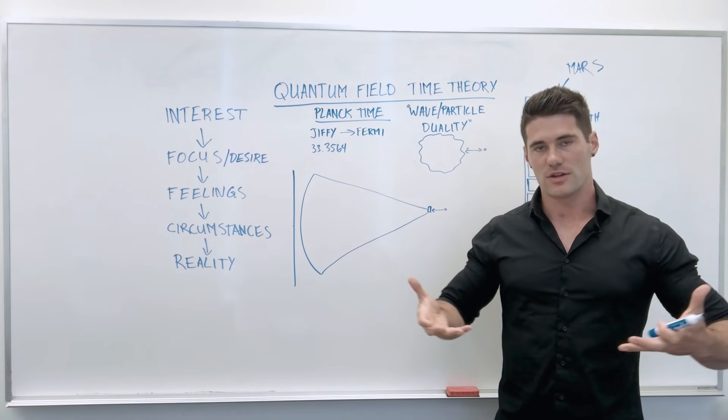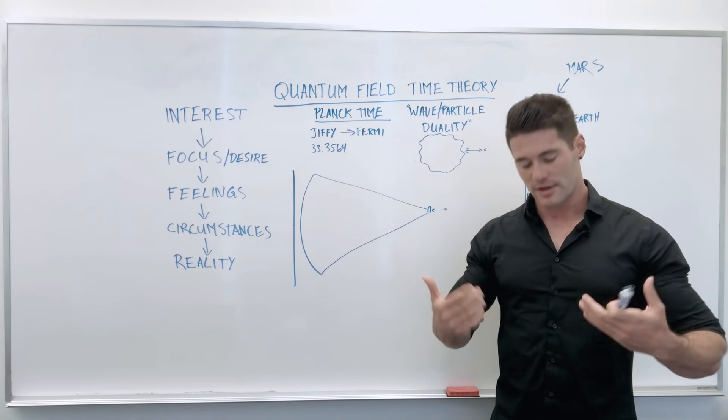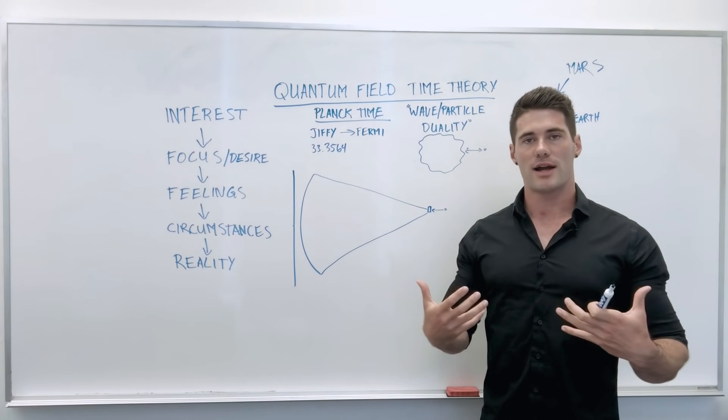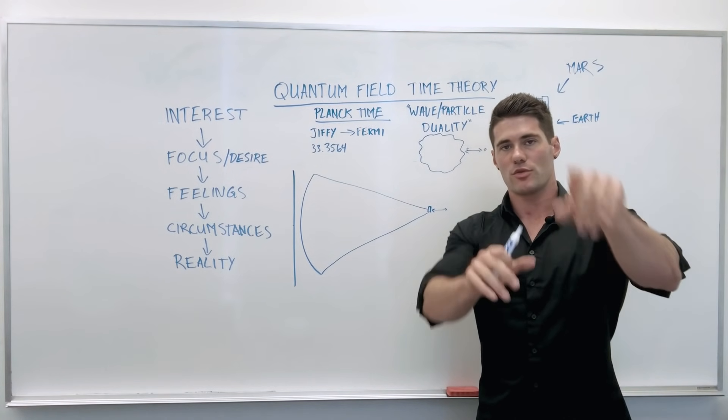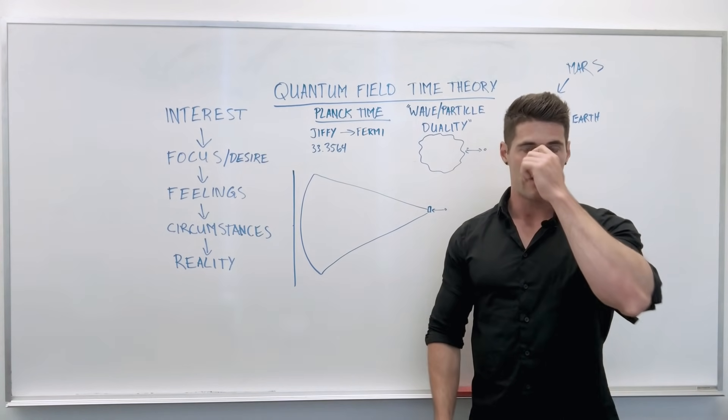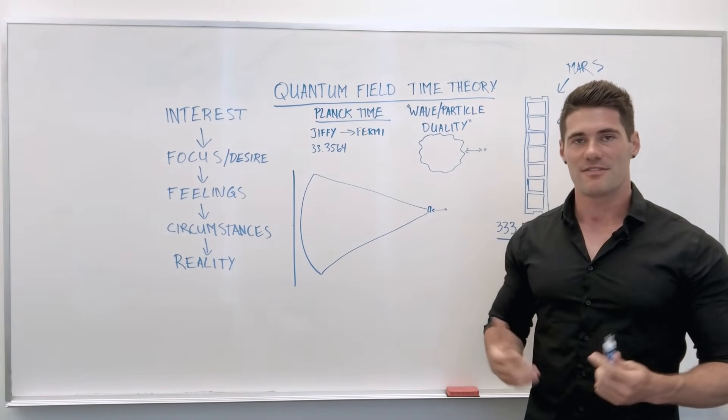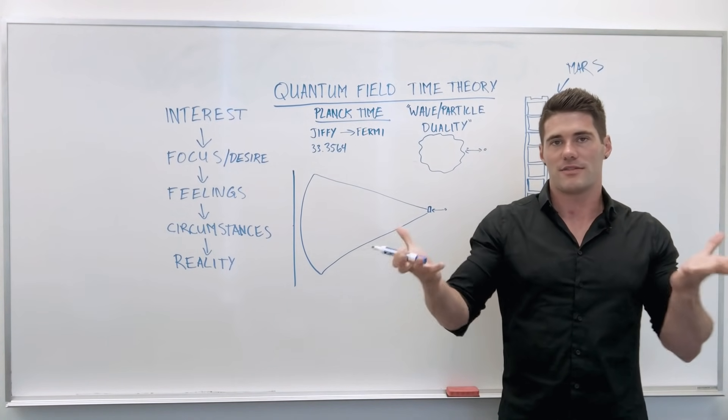The electron fields going through my body right now that are rippling to give you the appearance of me standing here are the same exact fields stretching through your body and creating your appearance and everything else you can see. So we are quite literally made of the same stuff. Everything is connected. Everything is one field of harmony.